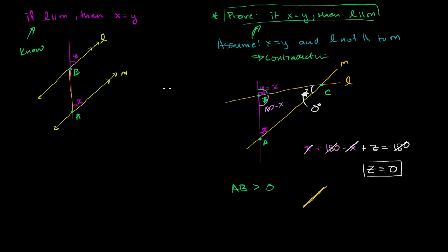So now we go in both ways. If lines are parallel, corresponding angles are equal. If corresponding angles are equal, then the lines are parallel.